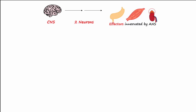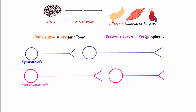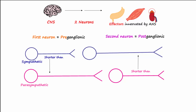It takes two neurons to get from the CNS to the effectors innervated by the ANS. The first is called the preganglionic neuron and the second is called the postganglionic neuron. Notice that the preganglionic neuron for the sympathetic is shorter than the preganglionic for the parasympathetic, and the postganglionic for the parasympathetic is shorter than the postganglionic for the sympathetic.